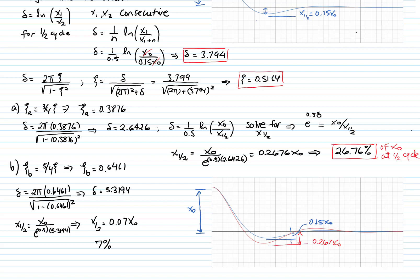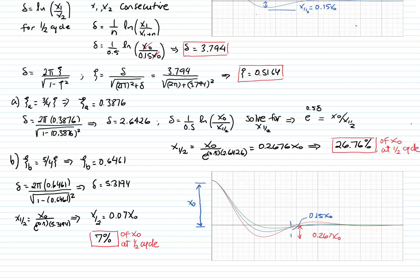If we graph this — shown now as the green graph — we see a much smaller amplitude at the half-cycle value, and that is because we have greater damping. Damping means dissipation of energy, so there is a reduction in amplitude for each cycle. In this case it is a large reduction even in just half a cycle because the damping is very high.